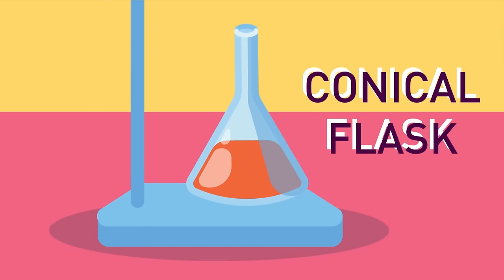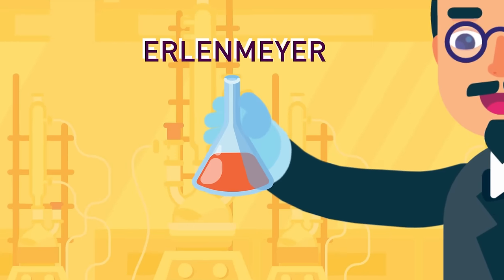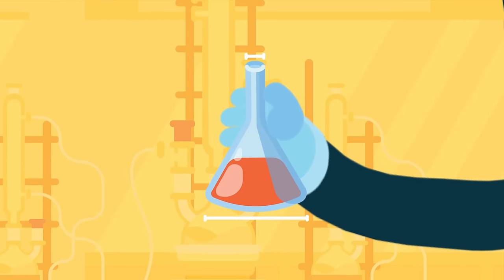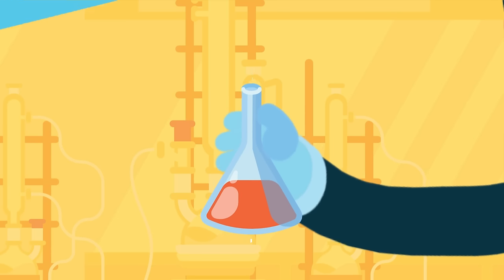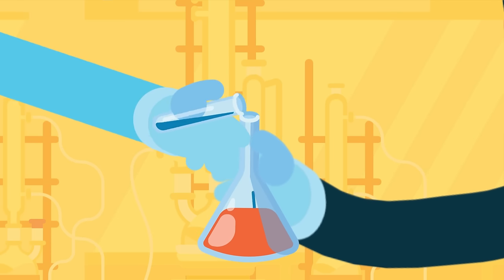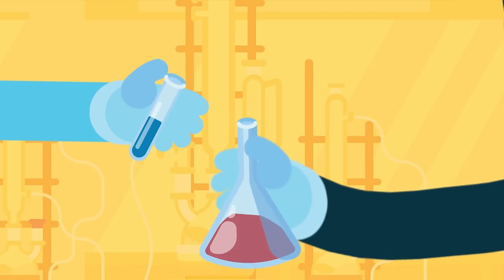Conical Flask. Also known as the Erlenmeyer flask, is a glassware that has a narrow neck that expands towards its base. It is used to hold and mix chemicals. The small neck is to facilitate mixing without spilling.